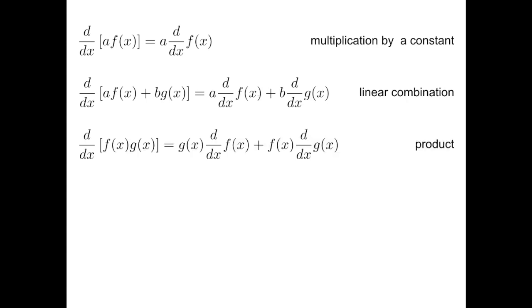For the product, there is this chain rule to be remembered. So the derivative of a product is the sum of two terms: the derivative of the first factor times the second, and the second is the derivative of the second factor times the first.